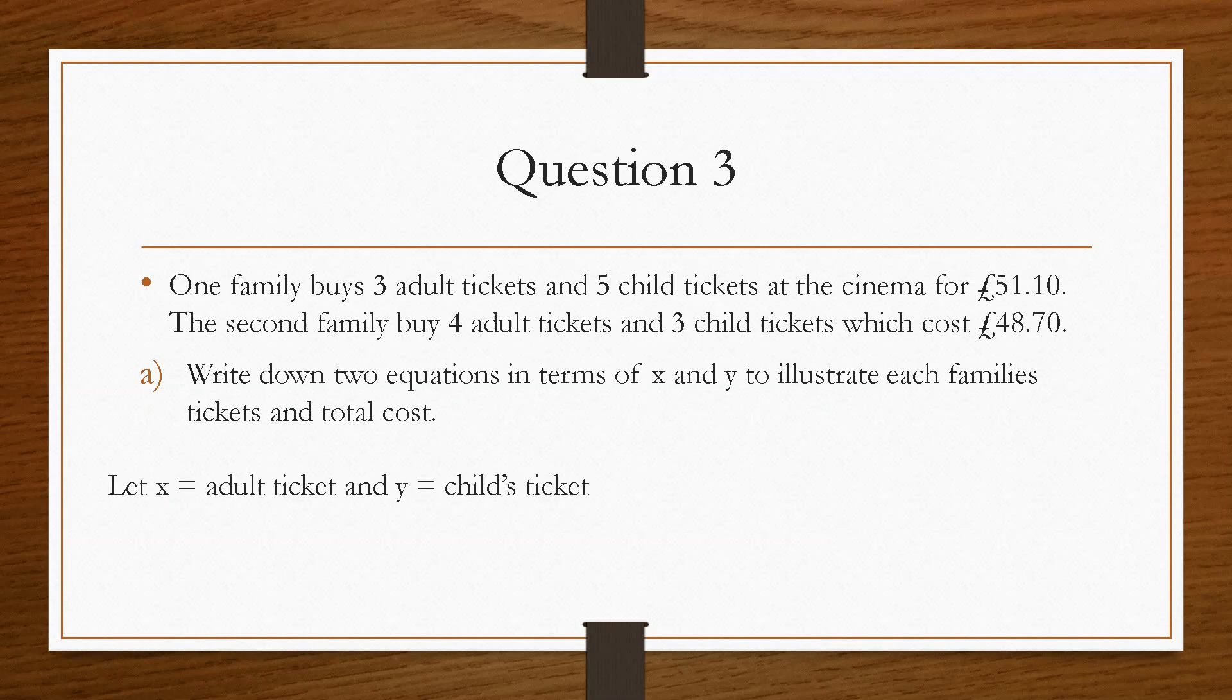So we'll let x be an adult ticket and we'll let y be a child's ticket. So family number 1 is going to be 3x plus 5y equals 51.10. So that means that 3x, which is 3 adults, 5y, which is 5 children, equals 51.10. And then it's the same thing for family number 2. We have 4 adults, so 4x. We have 3 children, 3y. And that comes to a grand total of £48.70. So this is done part A. We've created the two equations.